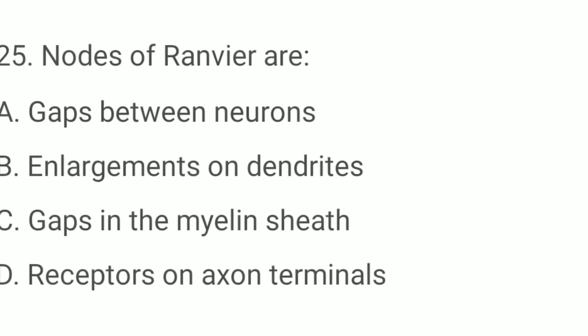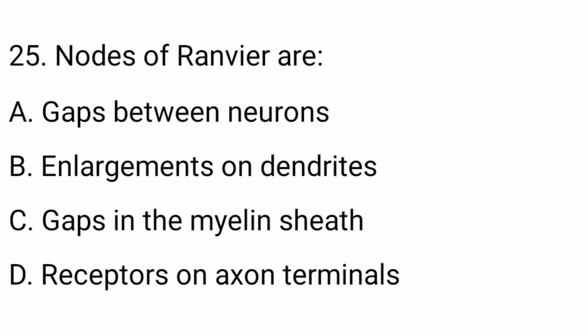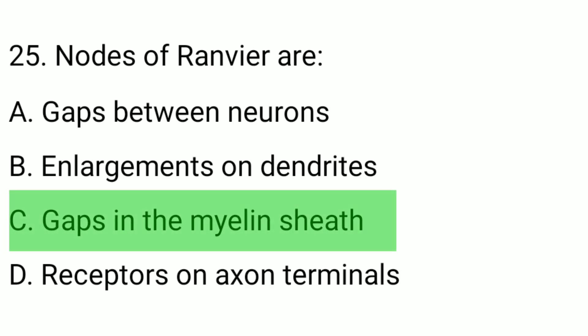Question number twenty-five: nodes of Ranvier are? The correct option is option C — gaps in the myelin sheath.